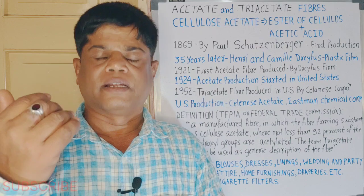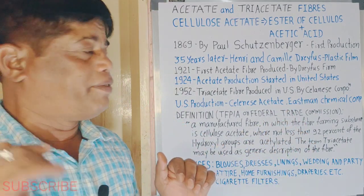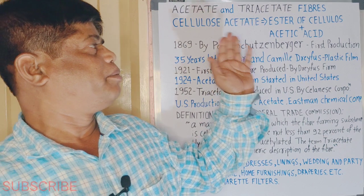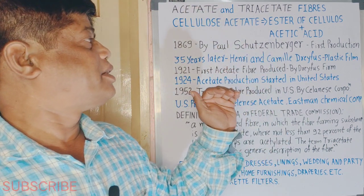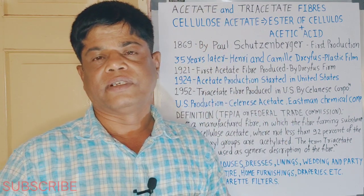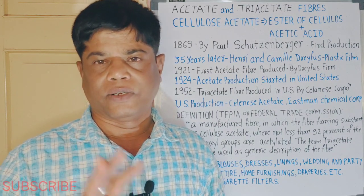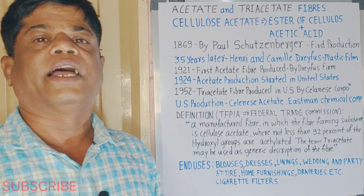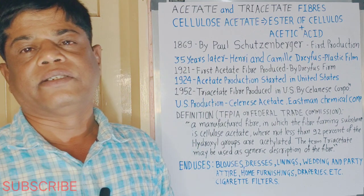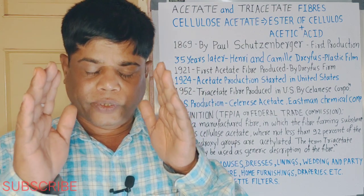Acetate fiber is produced by the mixing of esters of cellulose with acetic acid. First, the natural cellulose taken from wood plants or wood is extracted and converted into its ester along with acetic acid to manufacture acetate fibers.